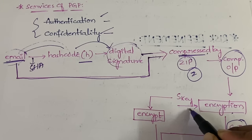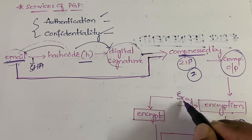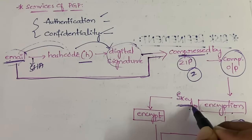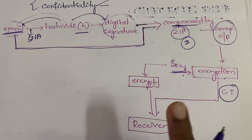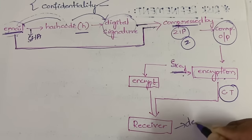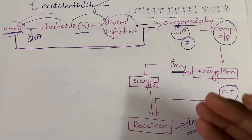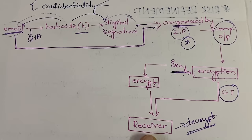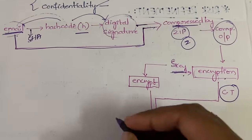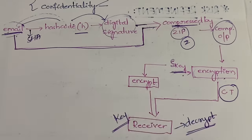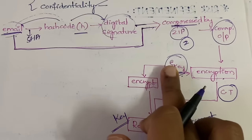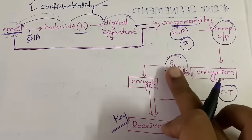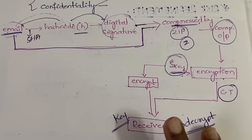To perform encryption you need a symmetric key, referred to as S key. Using this S key, encryption is performed and ciphertext is generated. That ciphertext is sent to the receiver. The receiver must decrypt the message to get the data, and to do so the receiver also needs the same symmetric key.